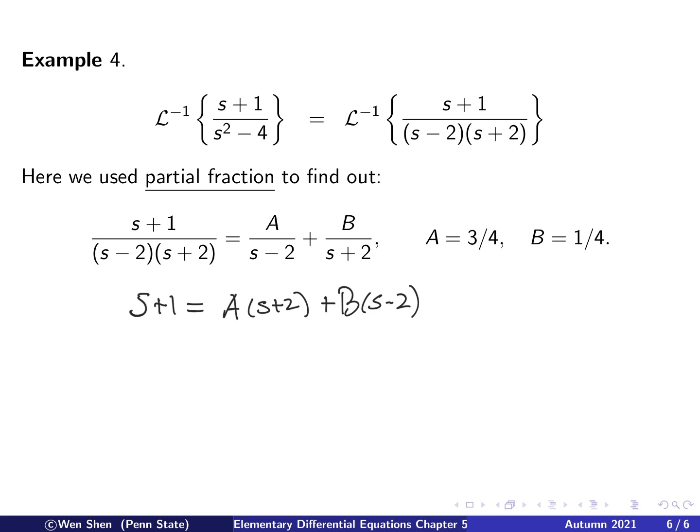So a simple way to find the number A or B is just plug in a number of s to see if it gives me A or B. So let's say I want to find what the A value is. So I can plug in an s term so that the B term disappears. That is, I can set s equal to 2. Then this term is 0. Then I get 3 here, and I get 4 here. So A is 3/4.